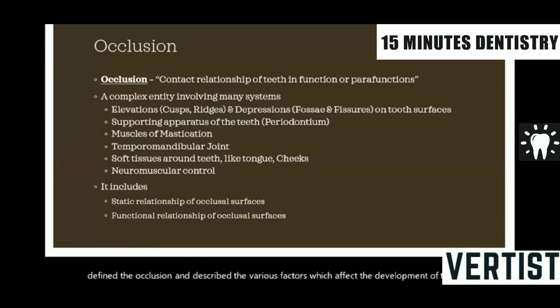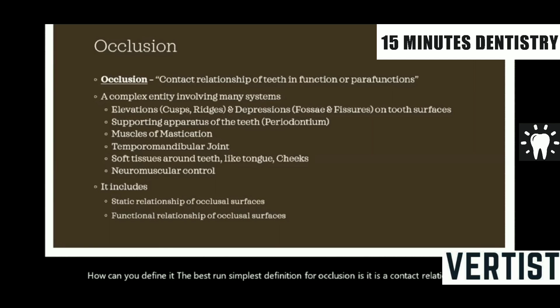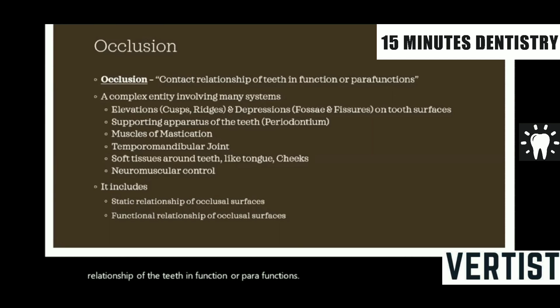Now, occlusion — how can you define it? The best and simplest definition for occlusion is: it is a contact relationship of the teeth in function or parafunctions. Occlusion as such is a very complex entity because it involves many different systems within it.